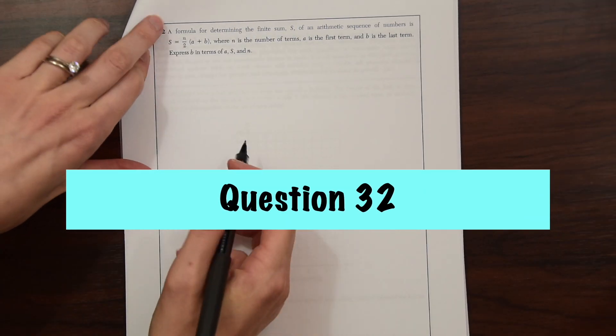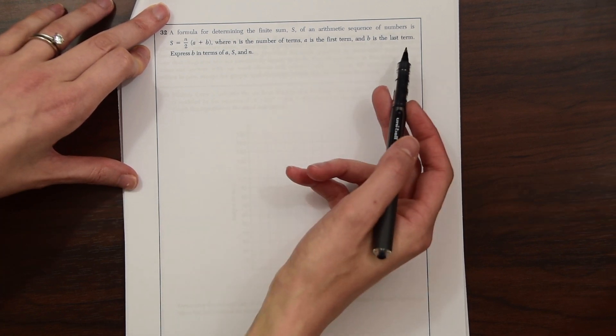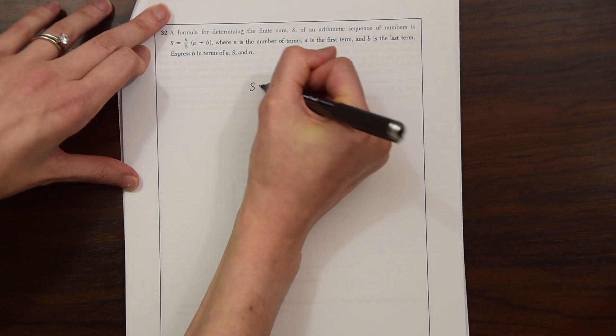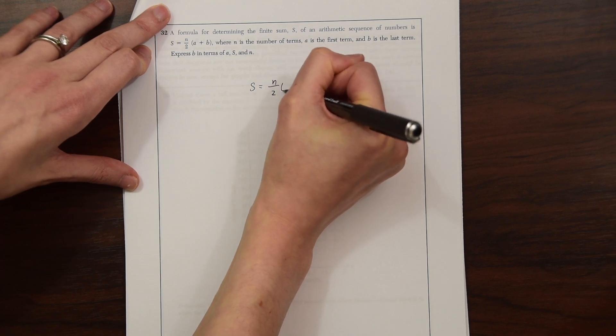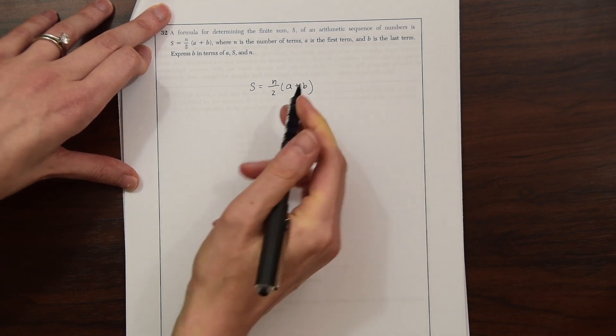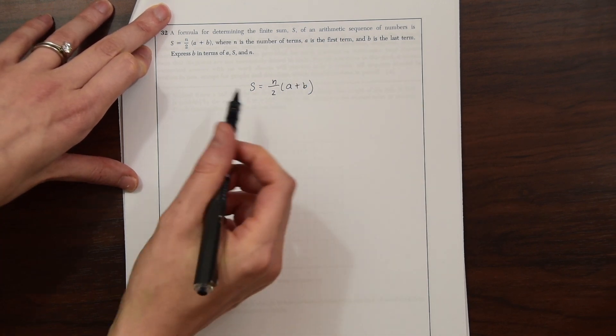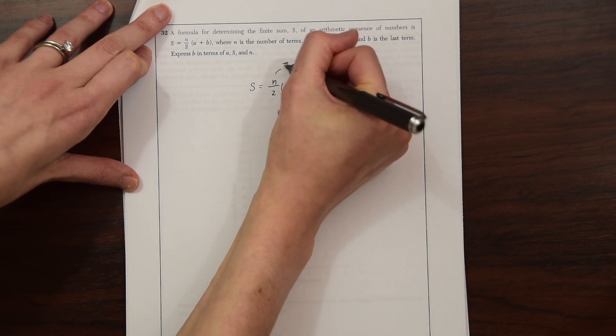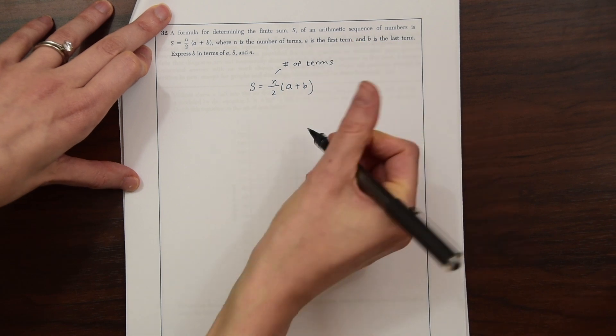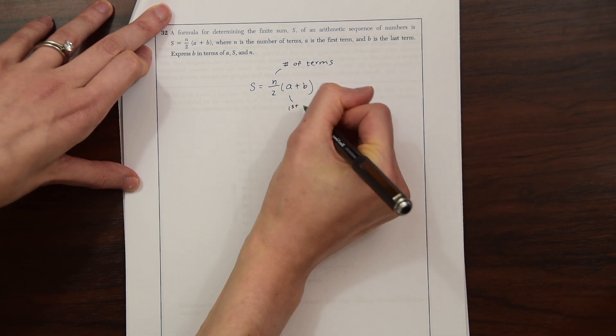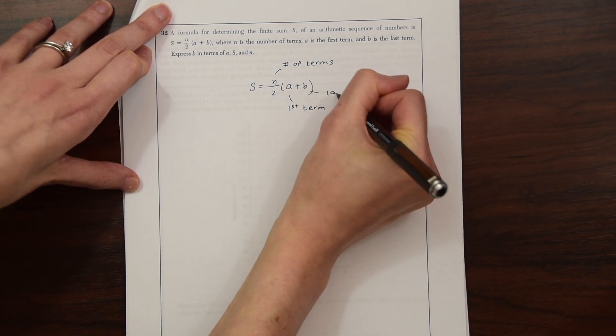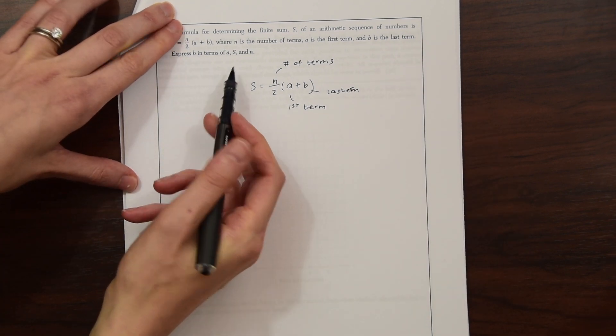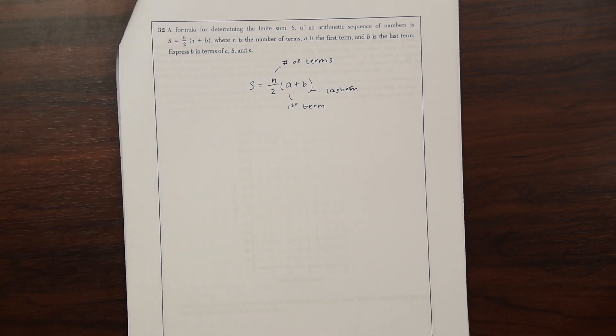Here's question 32. A formula for determining the finite sum s of an arithmetic sequence of numbers is this thing. So let's write this out. So we have s equals n over 2 times a plus b, where n is the number of terms. A is the first term, and b is the last term. So express b in terms of a, s, and n.